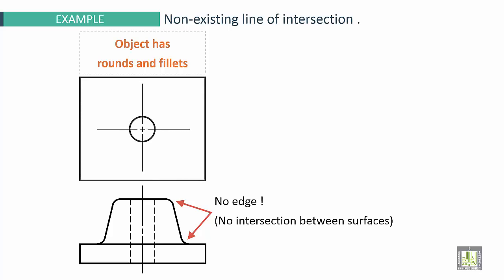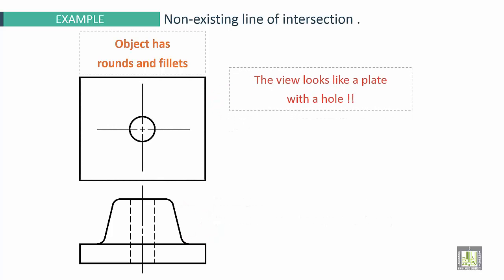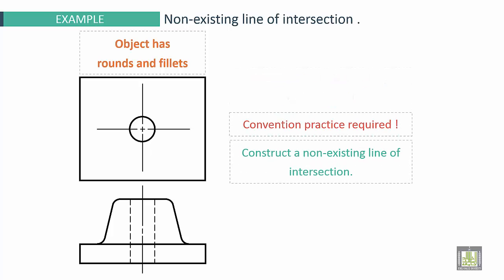No edge. No intersection between surfaces. Tangent. So the view looks like a plate with a hole. So what you have to do, by using Convention Practice required, construct a non-Existing Line of Intersection. These are non-Existing Line of Intersection.